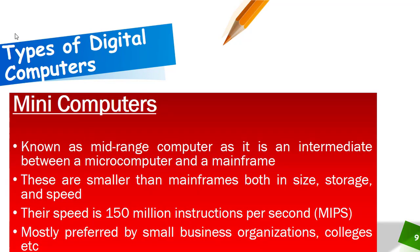The third type of digital computer is mini computers. Mini computers are smaller than mainframe computers both in size and facilities, and are also known as mid-range computers, as they are intermediate between microcomputers and mainframes. Their speed is 150 million instructions per second, and they are mostly preferred by small business organizations, colleges, and other small-sized companies.